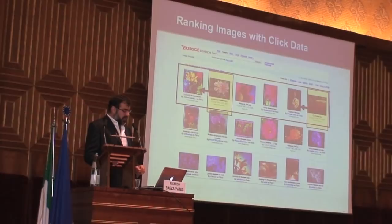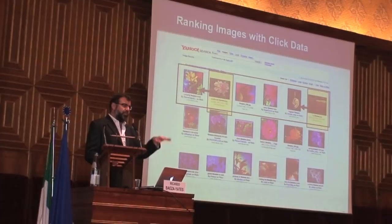If you see the watching patterns of people looking at images, it's not the same as text. So usually in text, people look from the top to the bottom and then from left to right. But in image search, people wander more around — they look at the right thing and then they look around.